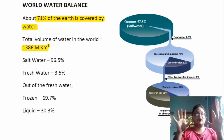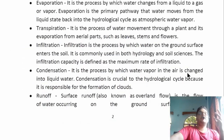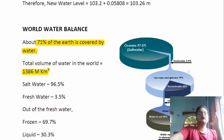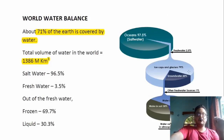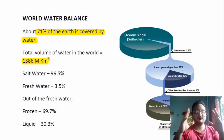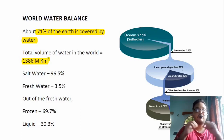This was the first chapter of engineering hydrology — the introduction — where we discussed the hydrological process and its various keywords, catchment areas, the water budget equation, a numerical example, and the world water balance. If you have any doubts, please write them in the comment section. Notes are available via the link in the description. Please like, share, and subscribe to the channel — your subscription helps me bring better videos.